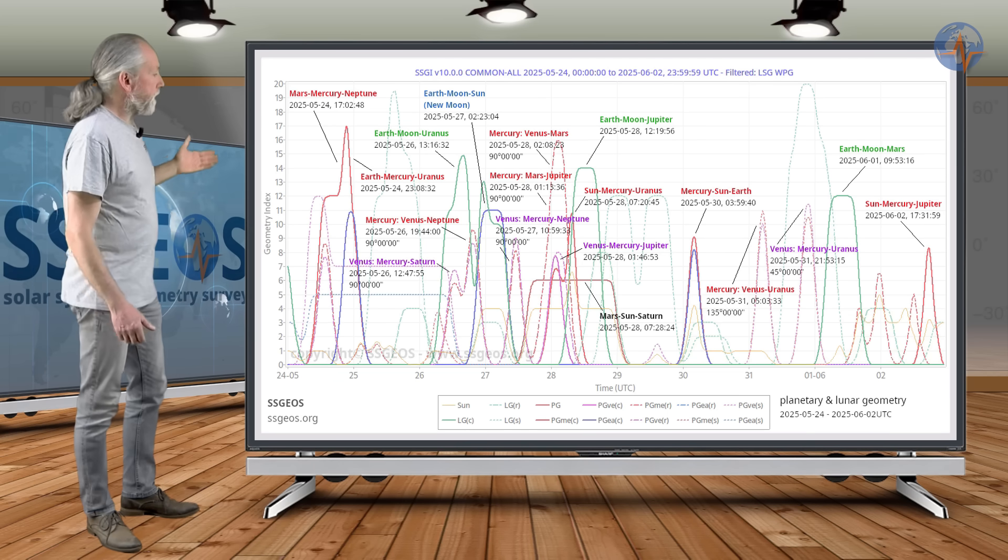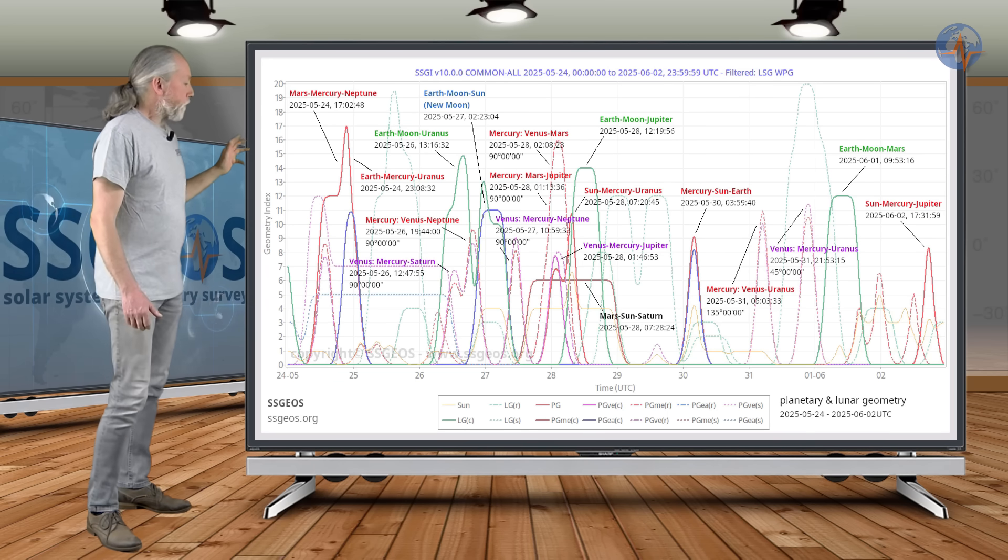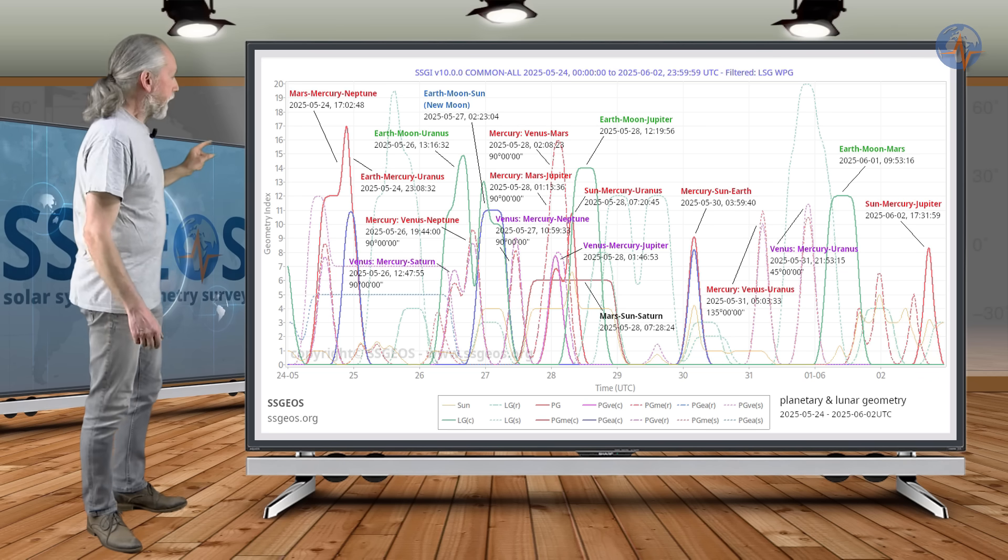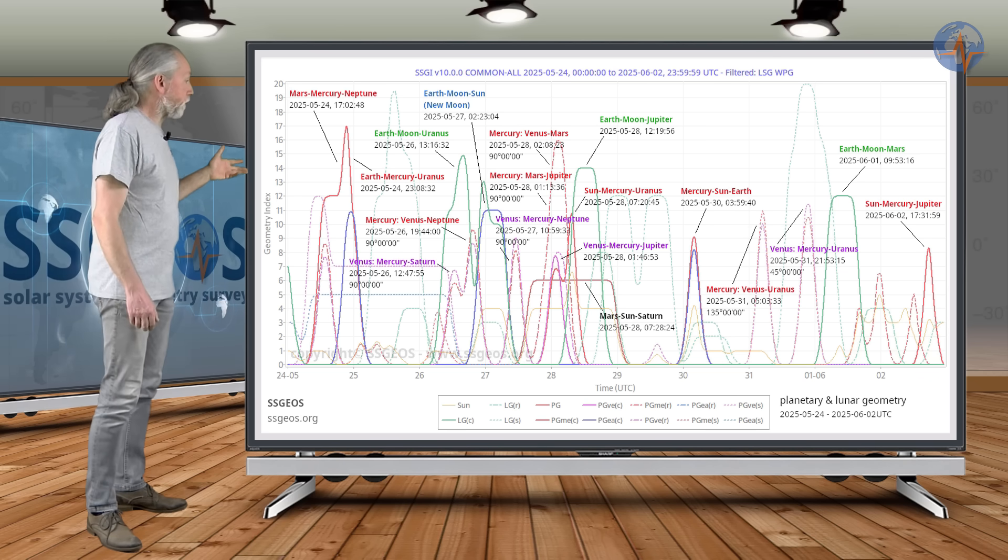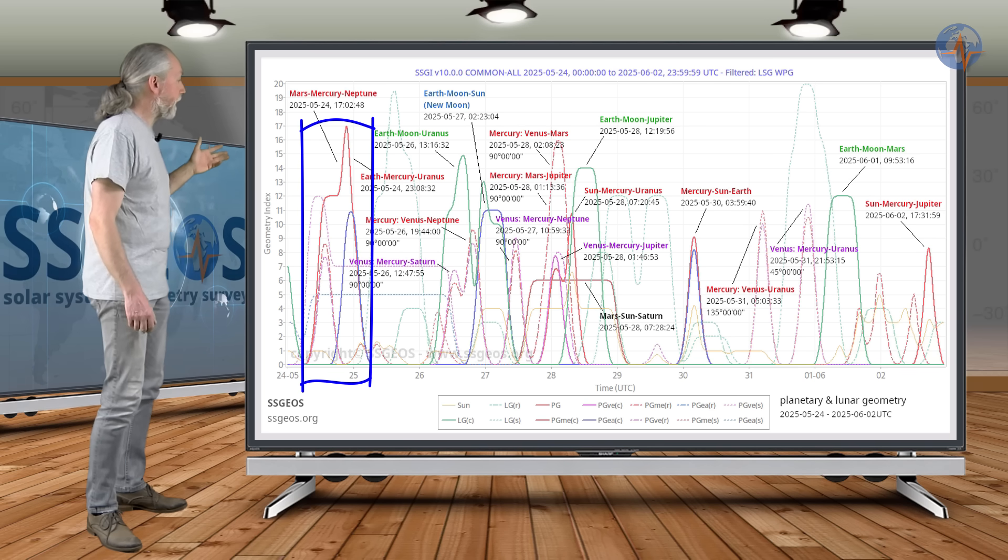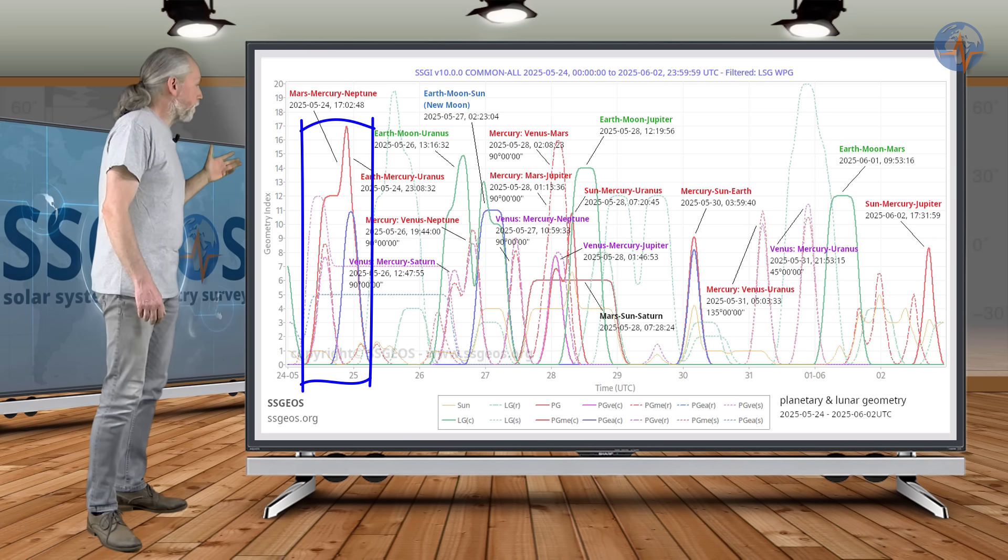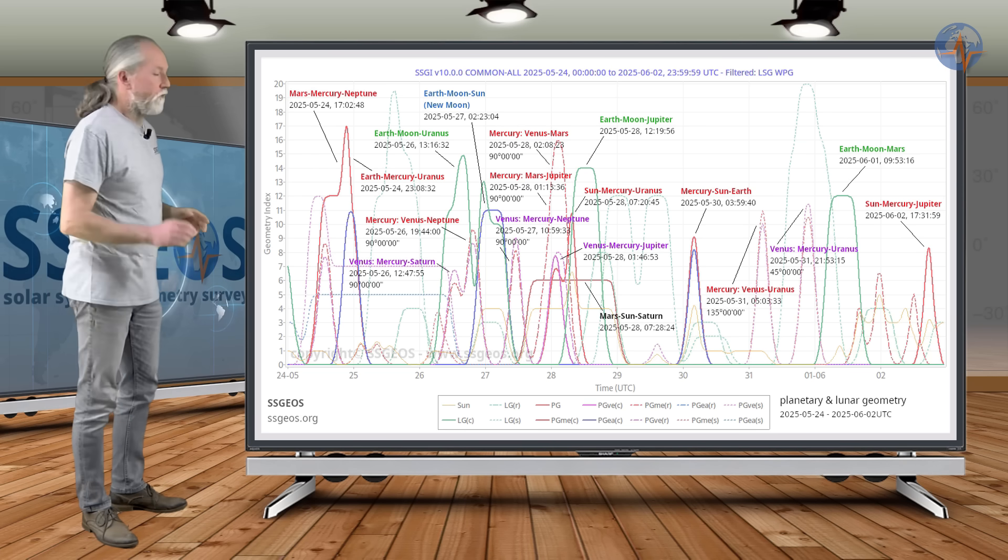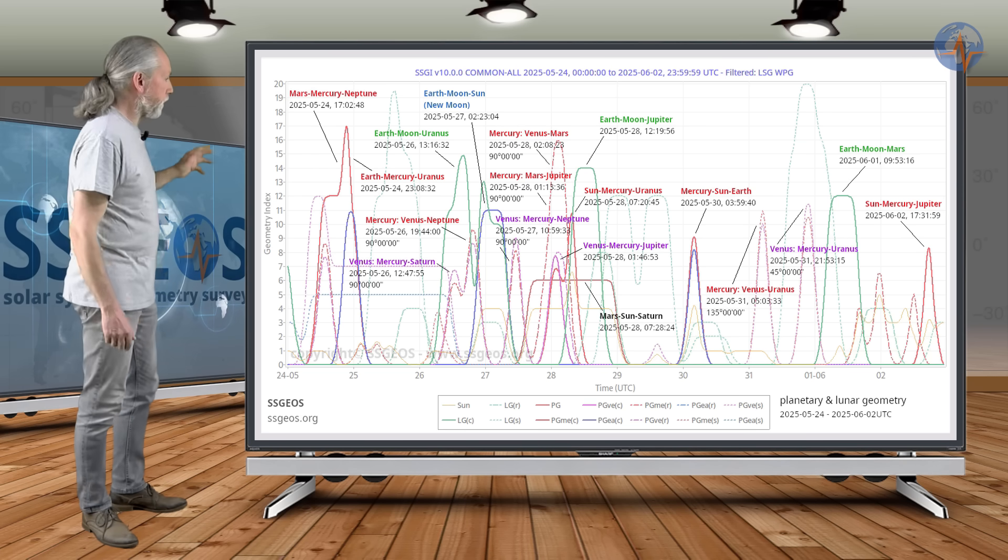So let's get on with the next time frame. We have some critical geometry that is noteworthy. Today, later today, we have some convergence with Mars-Mercury-Neptune, followed by Earth-Mercury-Uranus. There could be some seismic increase as a result. Venus is not involved. It's really with Mercury here.